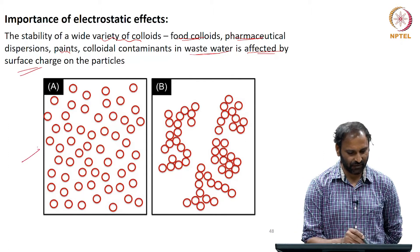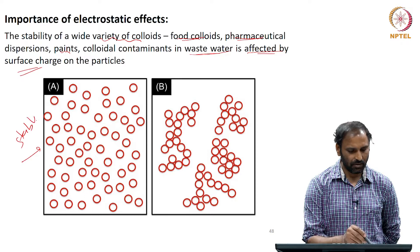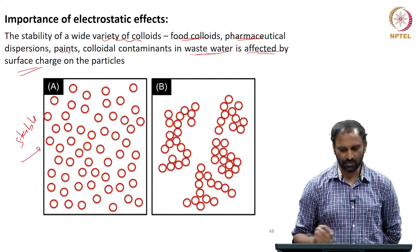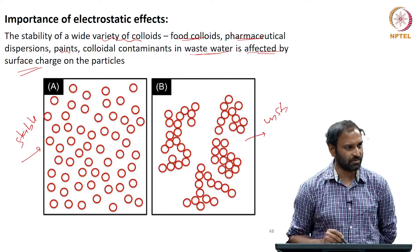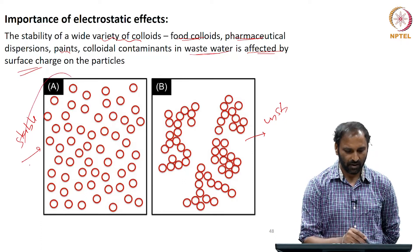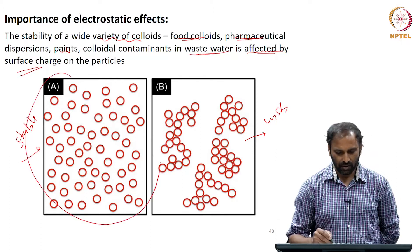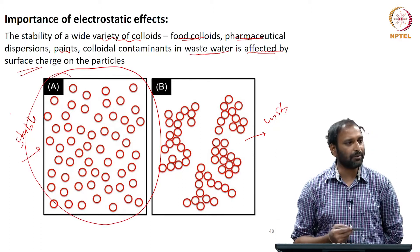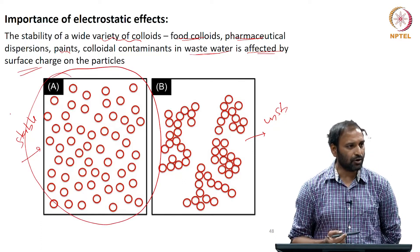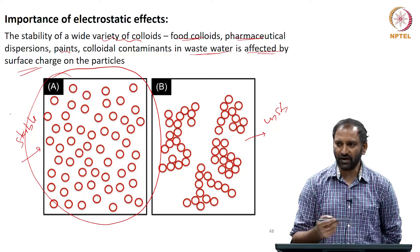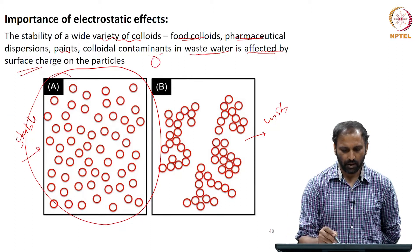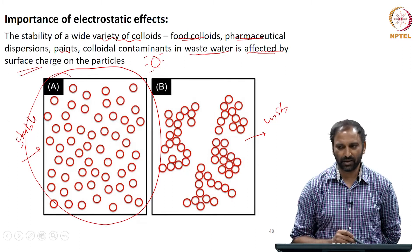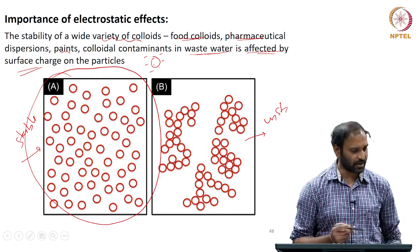This is an example of a stable system and an unstable system. If you want to have a stable colloidal system, one of the ways of achieving that would be by incorporating charge on the particle surface. So that is one example.